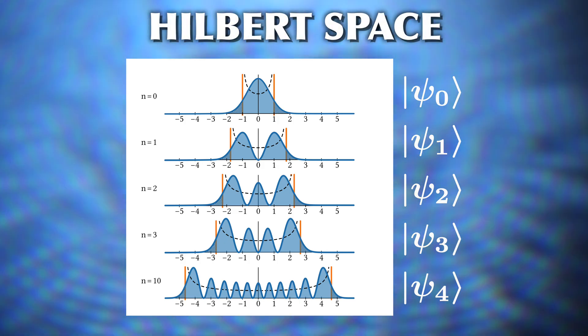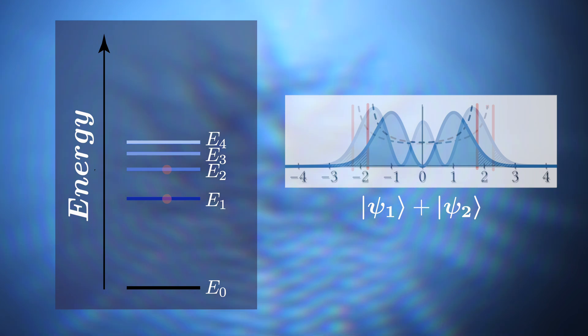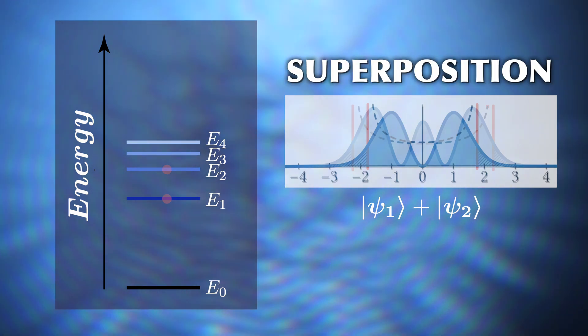But the fact that every state is a vector in a vector space implies a very important consequence. If you have several possible states, then any combination of those states will also be a viable state of the system. We call this a superposition. In simple words, a system can be in a combination of states instead of just one. And this is what people mean when they say an atom can be in two places at once. But we'll get back to what it really means later.